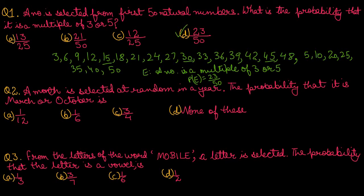Question number 2: A month is selected at random in a year. We know total number of months in a year is 12. The probability that it is March or October — March comes once and October comes once, so there are 2 favorable cases and 12 total cases. Simplifying, we get 1 upon 6. Option number B is correct.